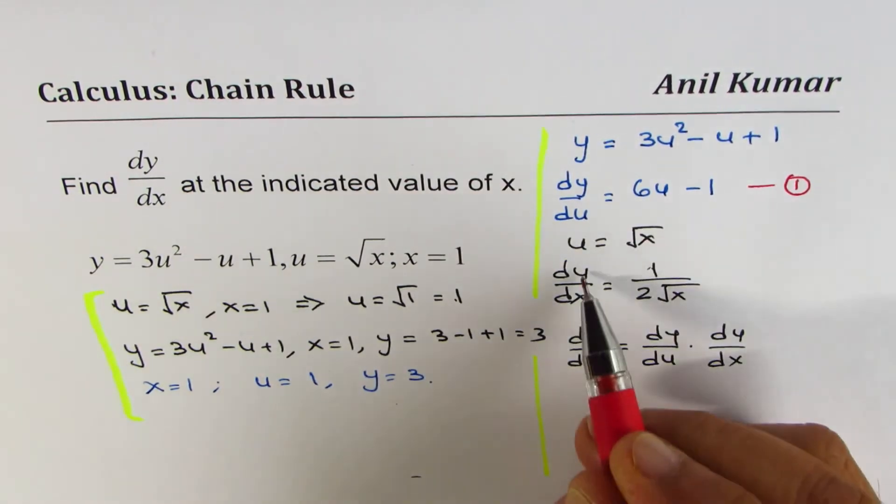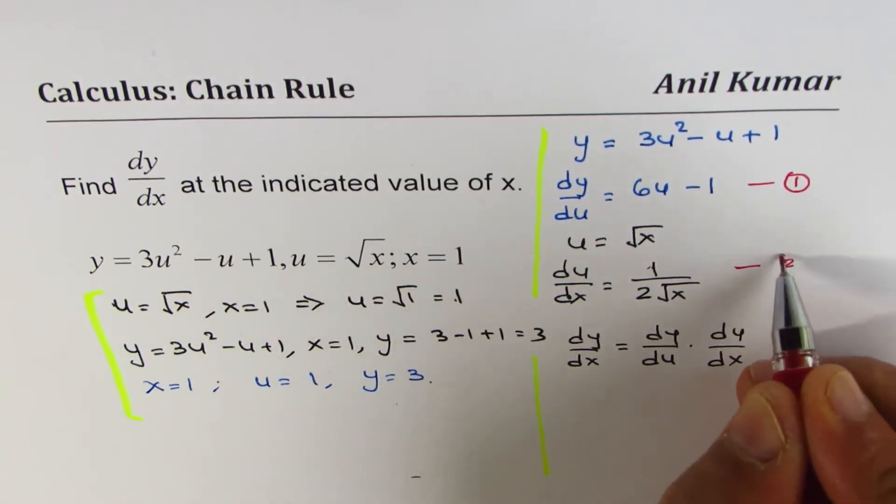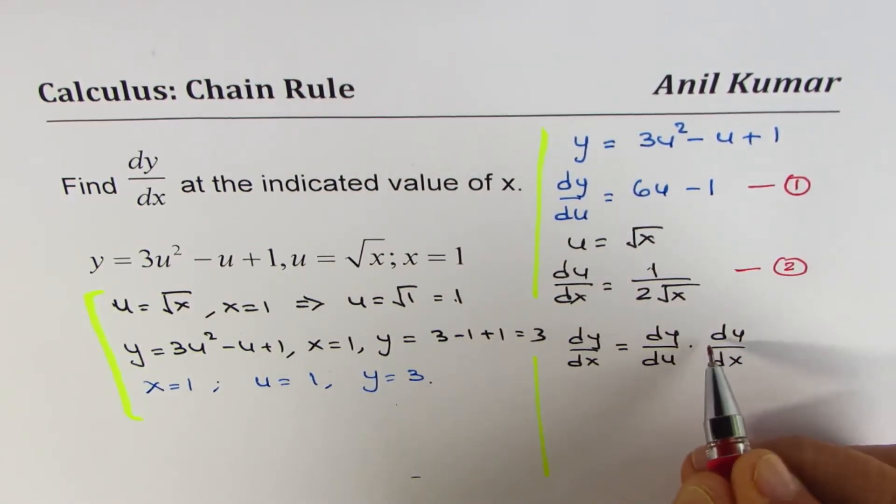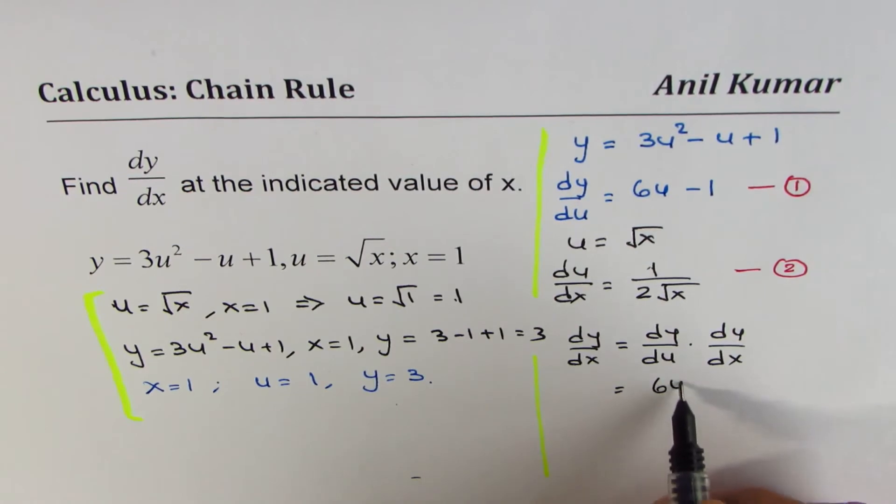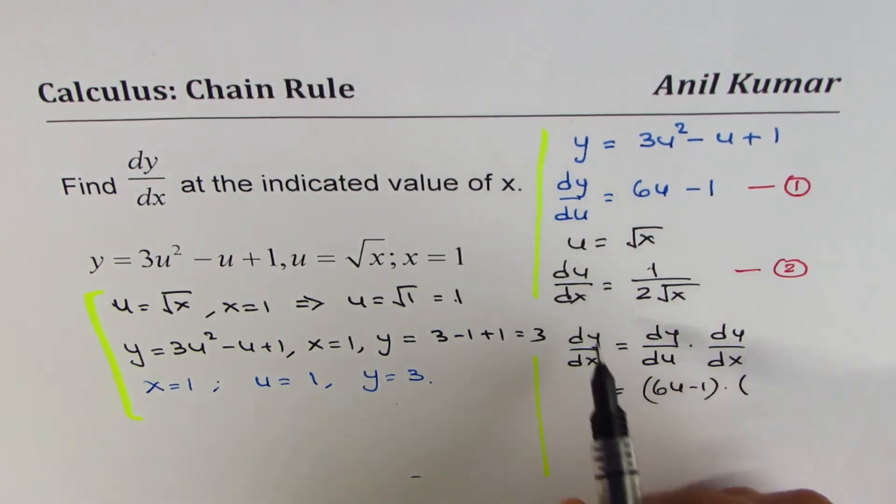That's equation 1. Du/dx is 1 over 2 square root of x. We'll substitute these values here. So we can write dy/dx equals (6u minus 1) times 1 over 2 square root of x.